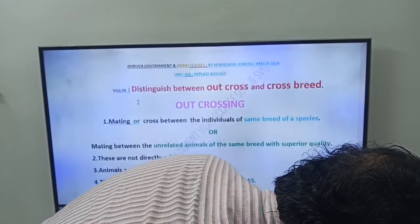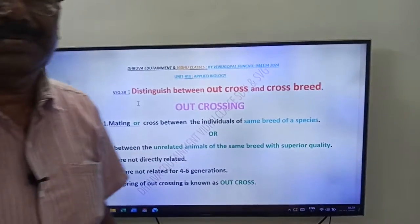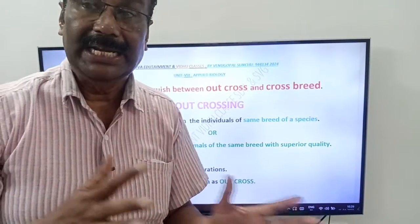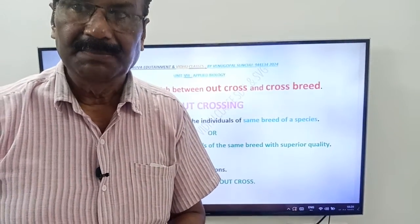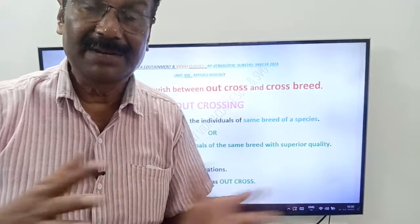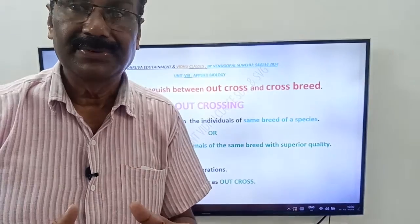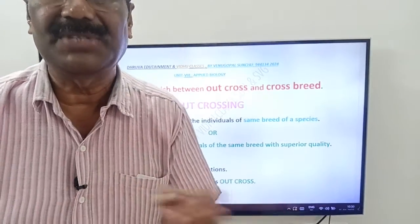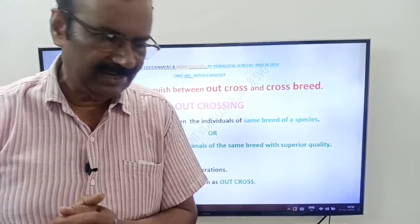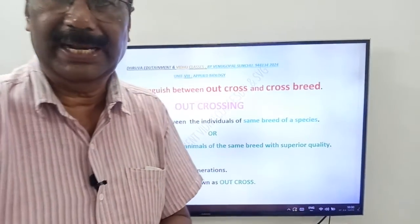Once again, see the question: Distinguish between outcross and crossbreed. What is outcross, friends? Mating between individuals of same breed of a species. What is crossbreed? Mating between two different breeds of same species. That is about outcross and crossbreed. Thank you friends, good day.